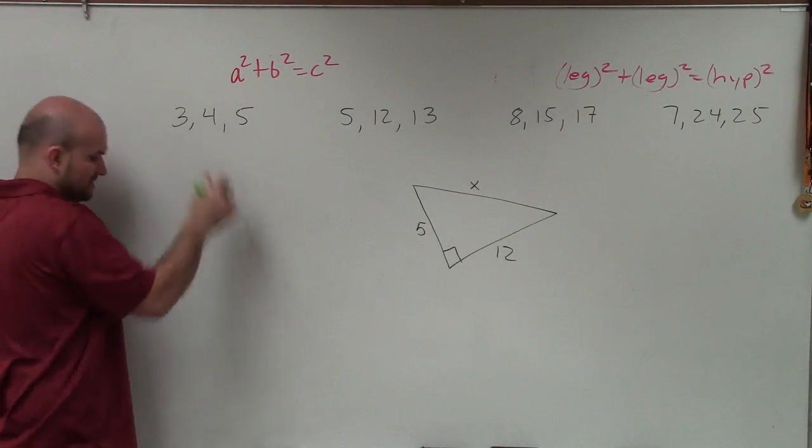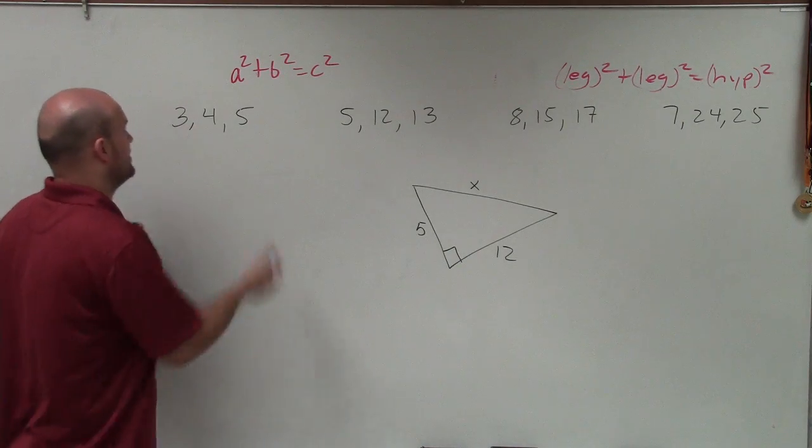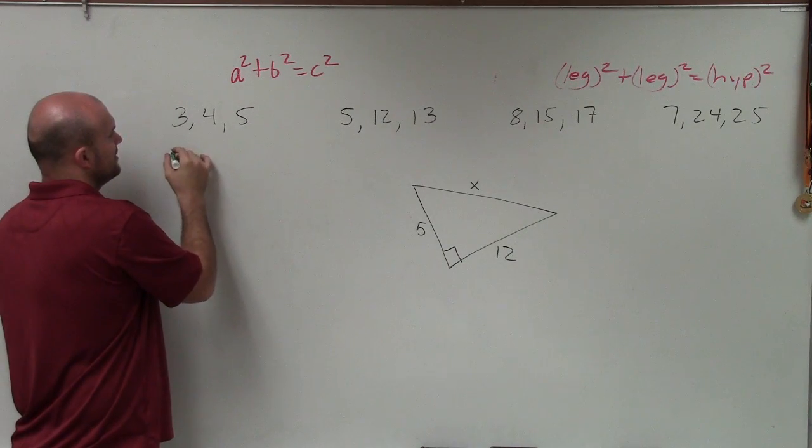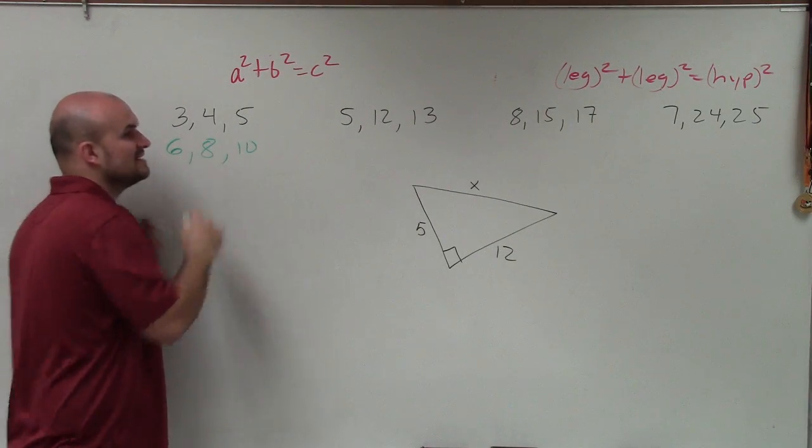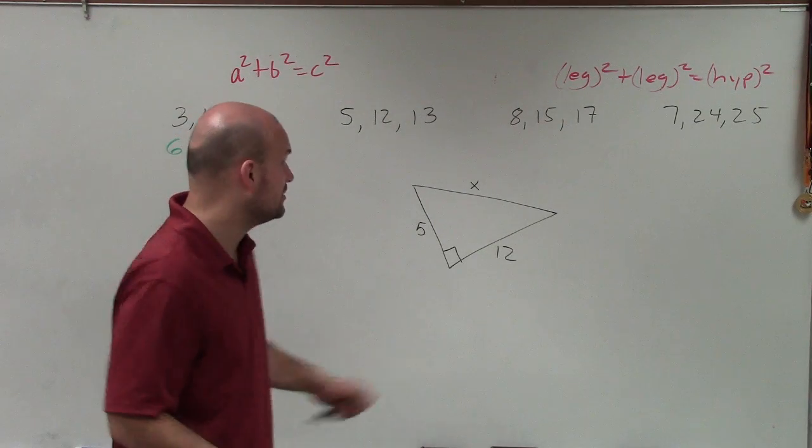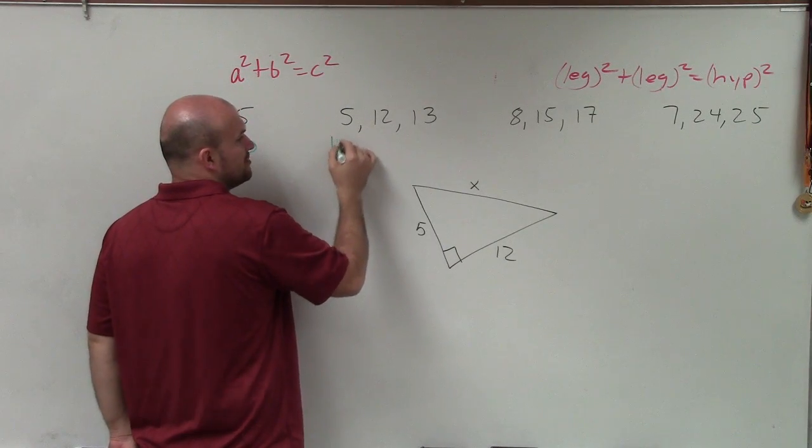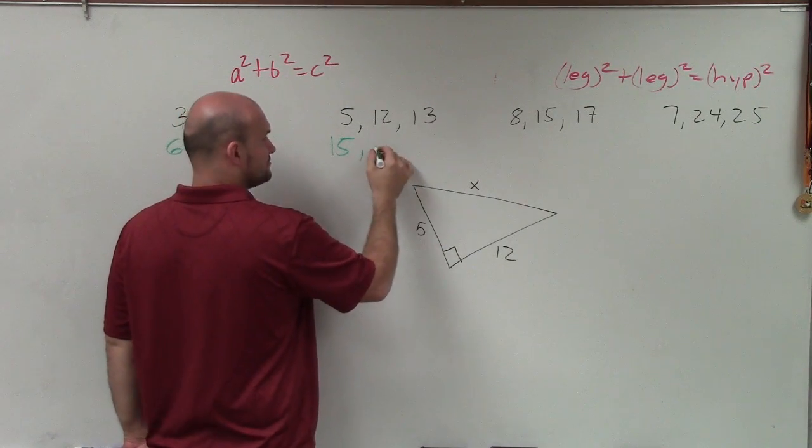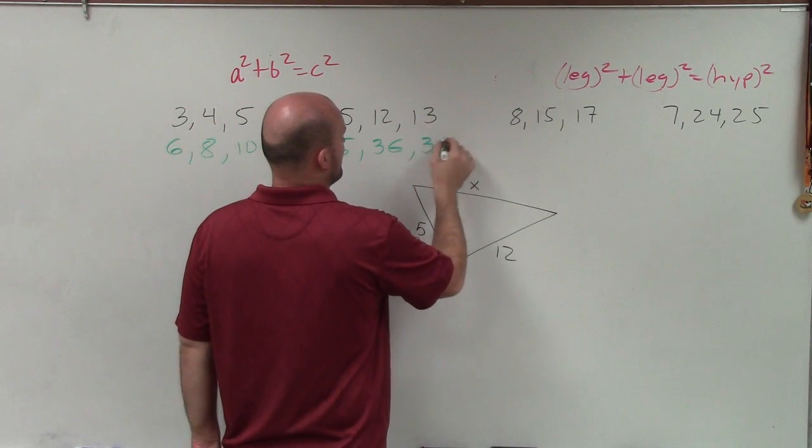But what's also nice about these Pythagorean triples is they are still true by multiplying by any multiplier. Therefore, if I multiply this by 2, I'd have 6, 8, 10. Well, 6, 8, 10 is also a Pythagorean triple. You could multiply these by 3 and it'd still produce a Pythagorean triple. So 15, 36, and you'd have 39.